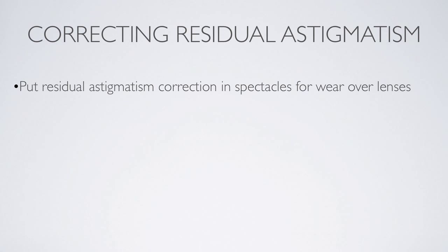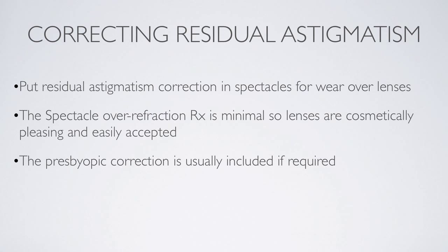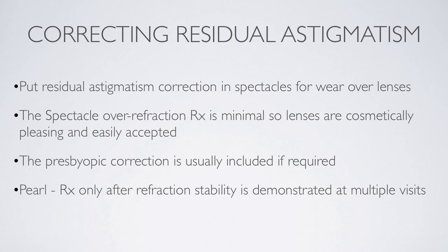What should we do if we wind up with residual astigmatism? The easiest way is to put the residual astigmatism correction in a pair of spectacles for the patient to wear over the lenses. When a patient has fairly good vision with their lenses — say 20-30 or 20-40 — but we can get them to 20-15 or 20-20 with glasses, they have the option of wearing the glasses when they want sharper vision. If the patient is a presbyope, we can incorporate the presbyopic correction into the eyeglass prescription. These glasses will be fairly thin and cosmetically pleasing. When I prescribe glasses, I don't rely on just one refraction — I like to have refractions from several visits to confirm a consistent finding.